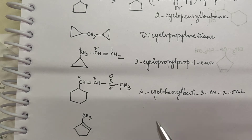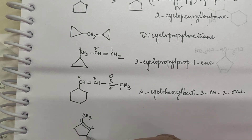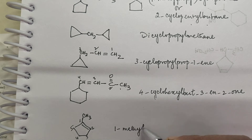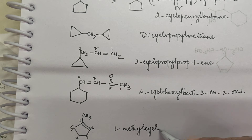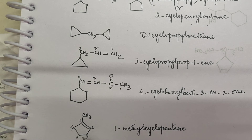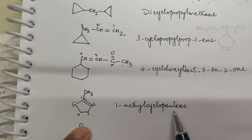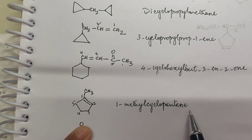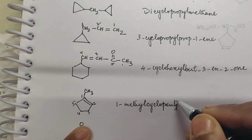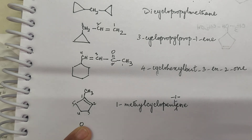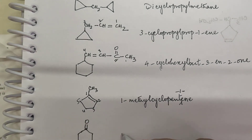How do you name this? Numbering 1-2-3-4-5, this is 1-methylcyclopentene. When you don't number it means the double bond is between 1 and 2. You can also explicitly call it 1-methylcyclopent-1-ene — there is nothing wrong with that.